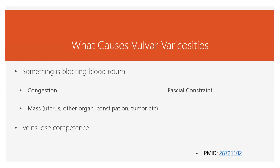The reasons for vulvar varicosities are really the same as any kind of varicosity. Something is blocking the vein return, or the veins lose integrity themselves — the little valves inside the vein are not able to open and close very well, and the walls of the vein are not strong enough to pull the blood up properly.